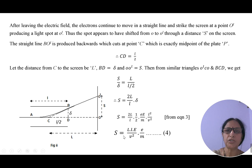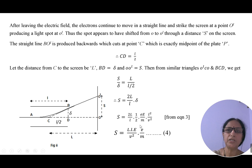In this expression, the shift S can be measured on the screen during the experiment. The lengths — capital L and small l — are tube constants provided by the manufacturers. The applied electric field can be measured using the formula E = V/D. The velocity of the electron still needs to be calculated.